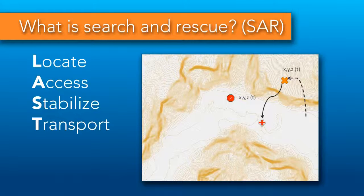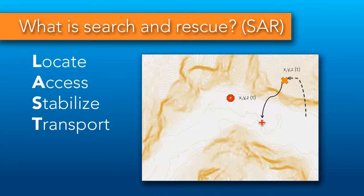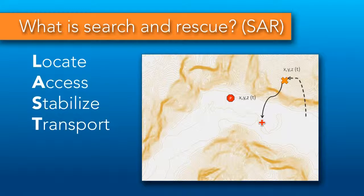First, we need to locate the victim. Then we need to access the victim once they're found. We need to stabilize the victim so they can be transported to safety. And then we need to transport the victim, and this route may not be the same that we use to access them. Within each of these phases, you'll find maps, or at the very least, mental maps used as part of the process.